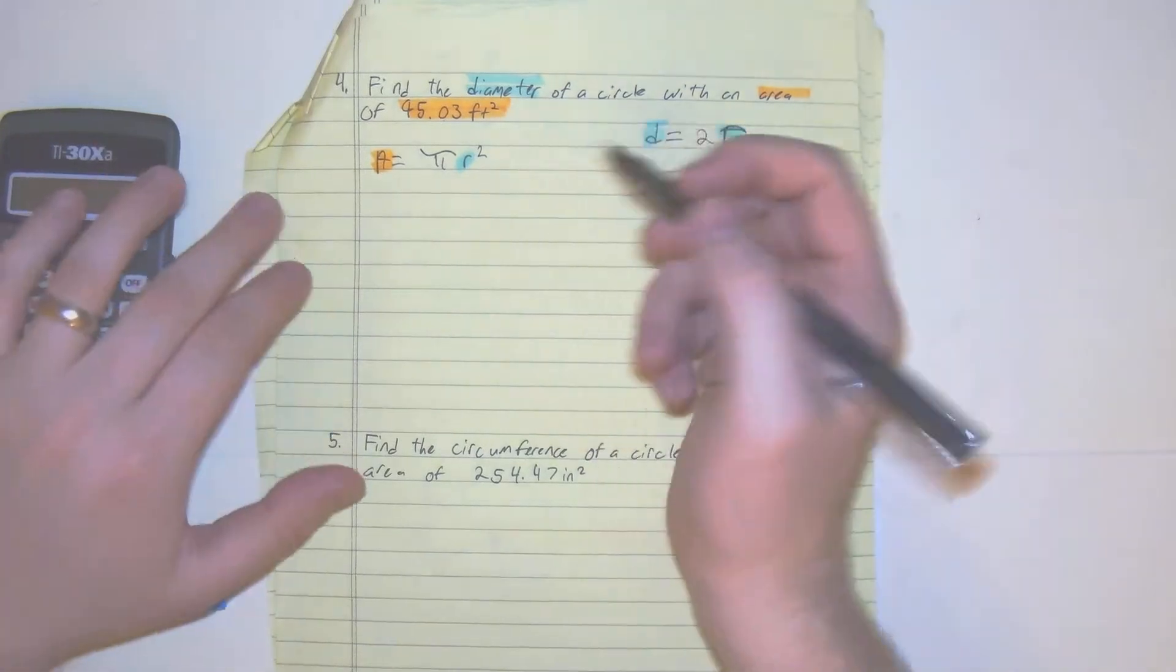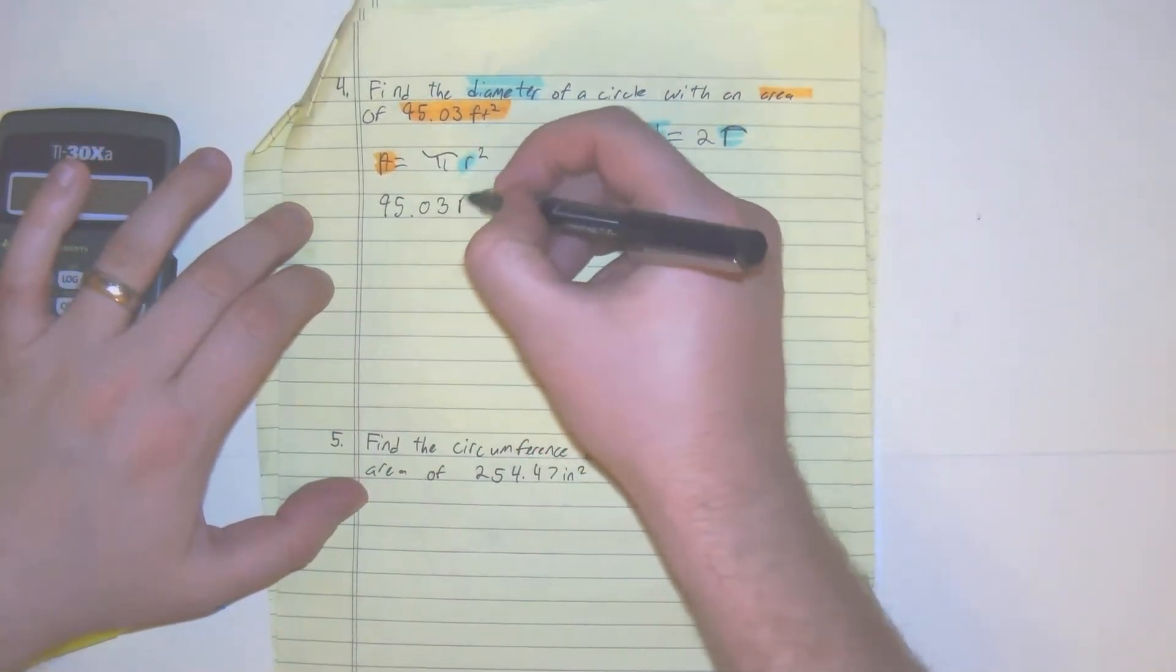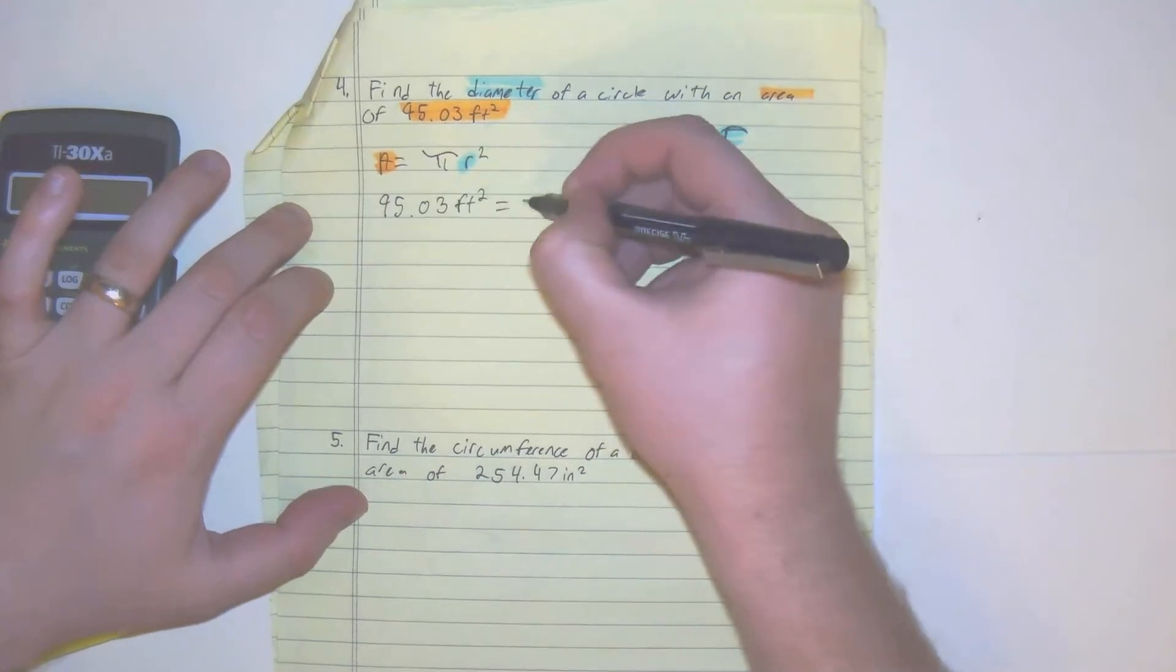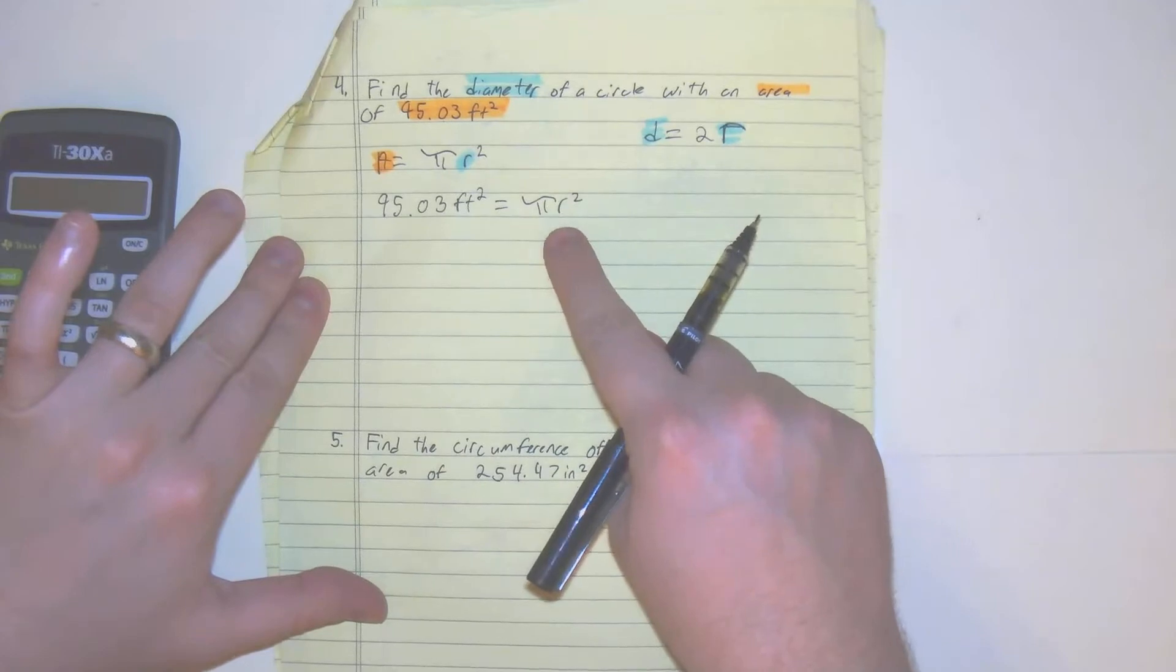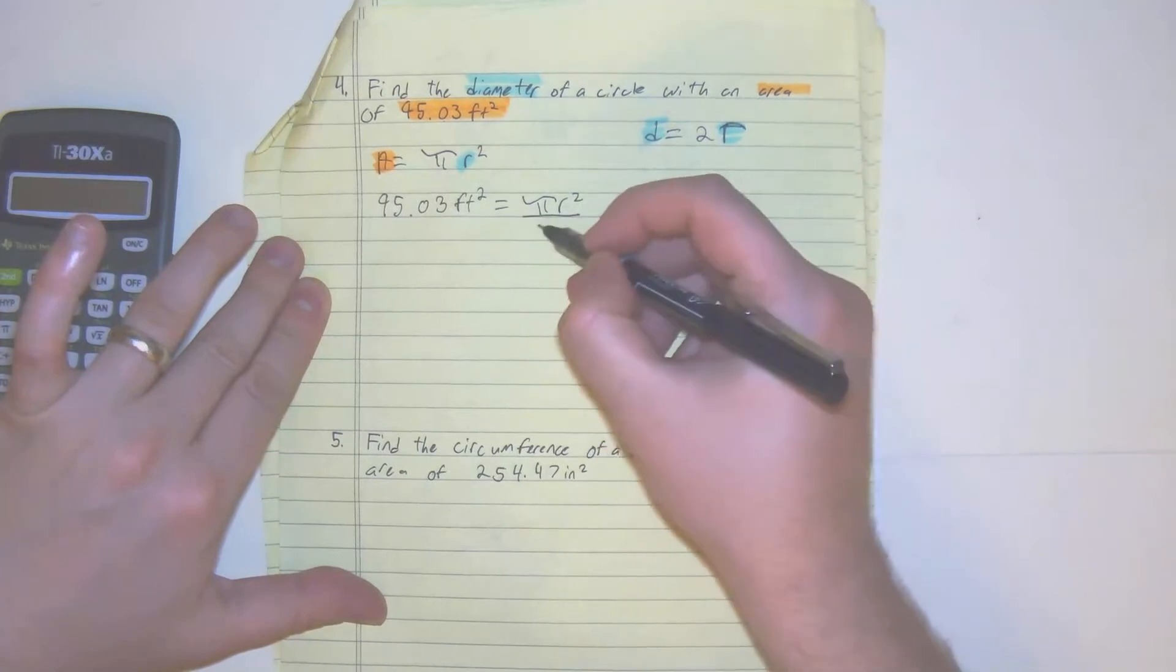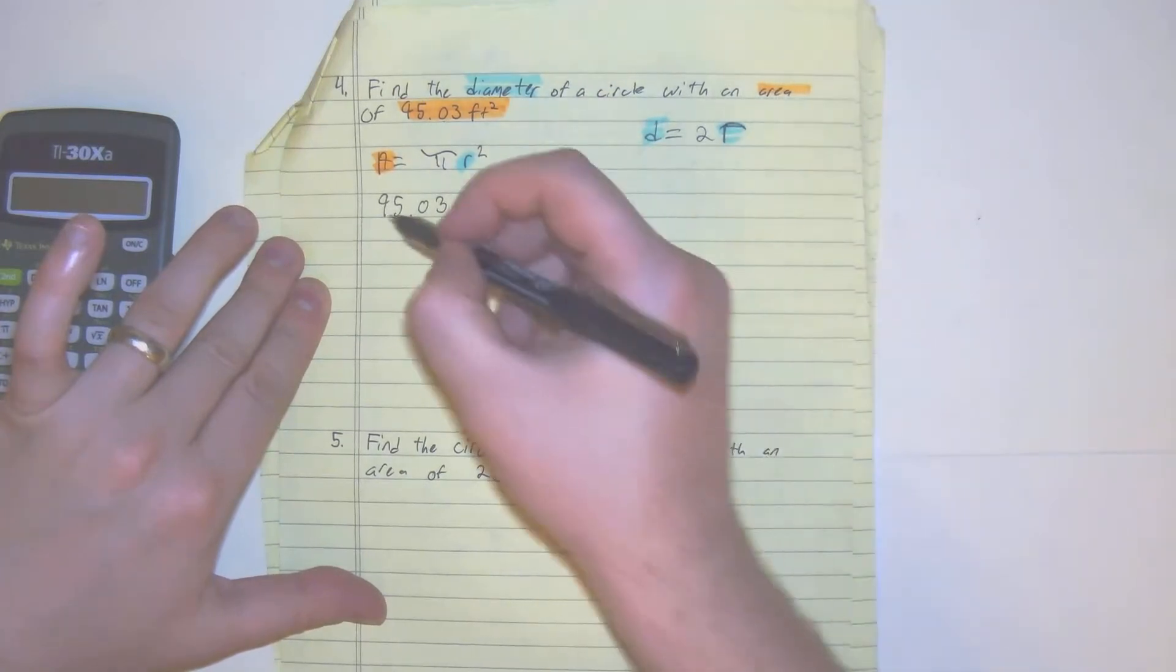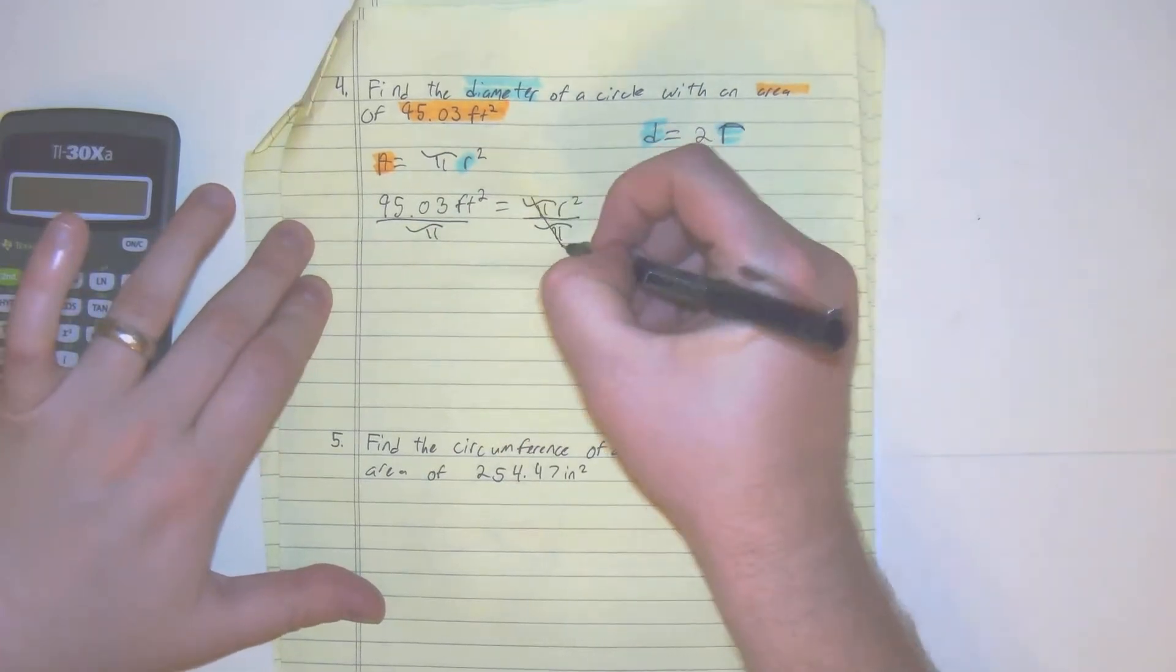So what we have here is 95.03 feet squared equals pi r squared. The first thing I see is we're multiplying. We're doing the inverse of order of operations. We divide everything by pi. It cancels.